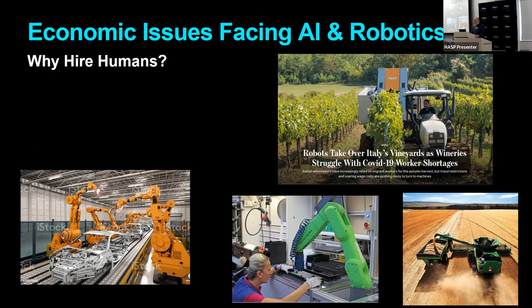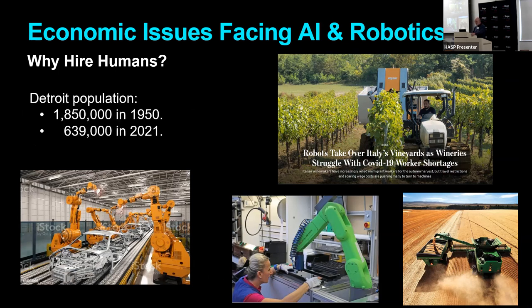Another economic issue is simply the impact of AI and robotics on human employment. More and more companies are asking, why should we hire humans? Those robots in the picture are performing part of the assembly of an automobile. Before any of that automation occurred, in 1950, the population of Detroit was 1.85 million. Last year: 639,000. That is largely the result, both direct and indirect, of automation in the auto industry. It is a real issue.